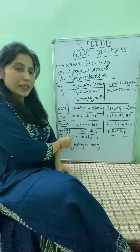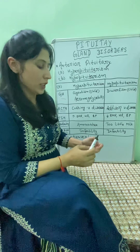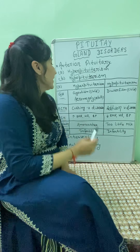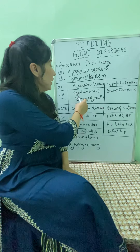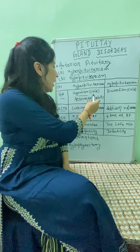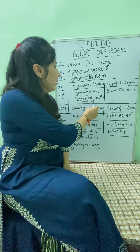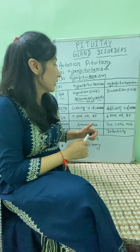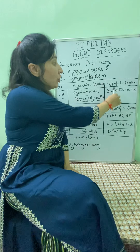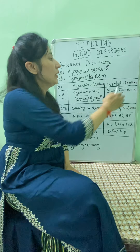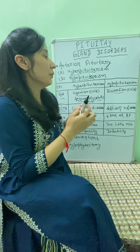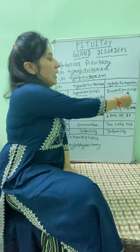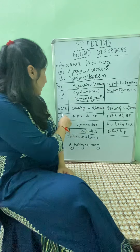First, we discuss about growth hormone. If there is increased growth hormone, there can be gigantism in a child and acromegaly in an adult, with enlargement of the hands, feet, and face. In hypopituitarism, there will be dwarfism, where physical growth will be less than average growth, and this can happen in children.